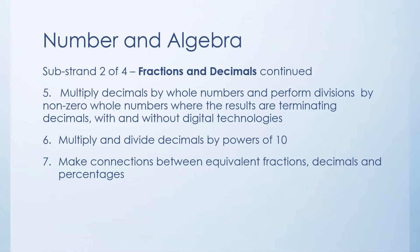The final content descriptor is making connections between equivalent fractions, decimals and percentages. So equivalent fractions just being equal fractions such as a half and two quarters and then just looking at how those numbers are the same for decimals and percentages and just seeing the connections between them. It's really important that you're able to understand this.